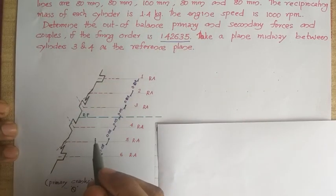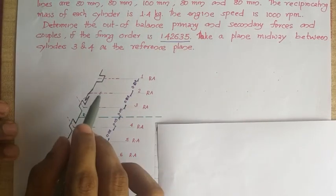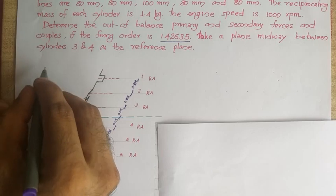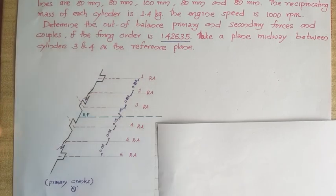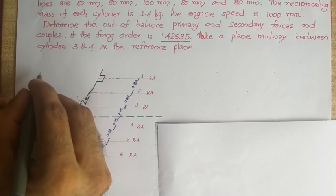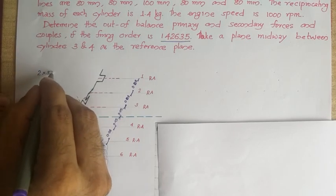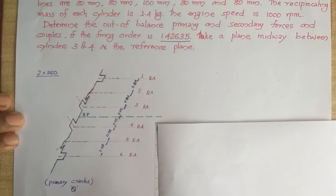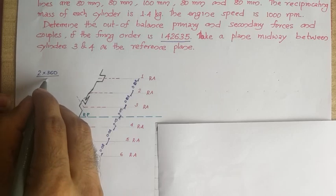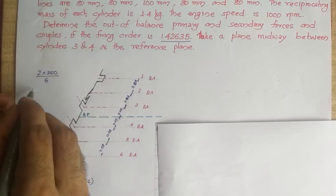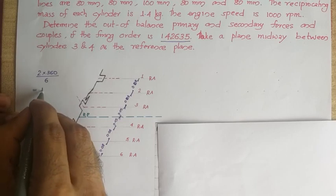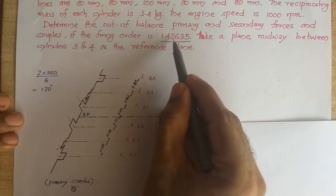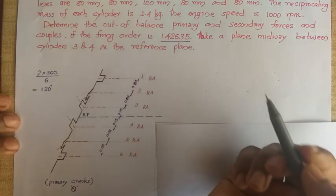This is a 6-cylinder 4-stroke engine. To get the angle between adjacent cranks: a 4-stroke engine completes one cycle in 2 full revolutions, that is 720 degrees. With 6 cranks, this gives an angle between adjacent cranks of 720 divided by 6, which is 120 degrees. The firing order is used to mark these angles between adjacent cranks.